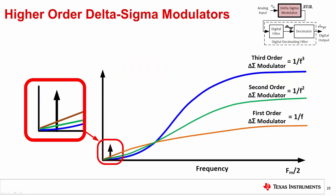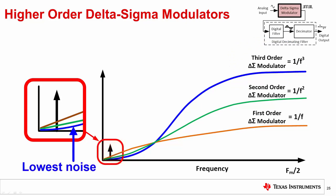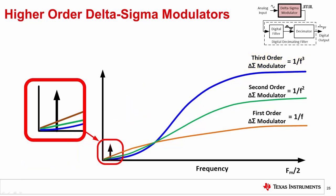This diagram shows the spectral noise densities for first-, second-, and third-order modulators, all with sampling frequency FS. Higher-order modulators achieve better SNR at lower data rates because they shift more noise to high frequencies and reduce quantization noise near the signals of interest. Looking at this example, the third-order modulator, shown in blue, has the lowest noise near the signal of interest because that noise was shifted to high frequencies. The noise at high frequencies is not important as it will be filtered out by a low-pass digital filter in the next stage.